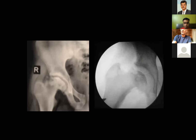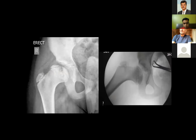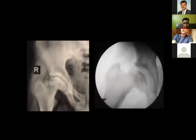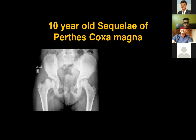Differentiating coxa magna without hinge abduction from hinge abduction is critical because the treatment is completely different. When you can abduct and the medial space doesn't increase, you cover the large femoral head with a femoral, acetabular, or combined procedure. When there is hinge abduction due to an irregular femoral head, you must address that problem with a valgus osteotomy, femoral head reshaping, or a shelf procedure.